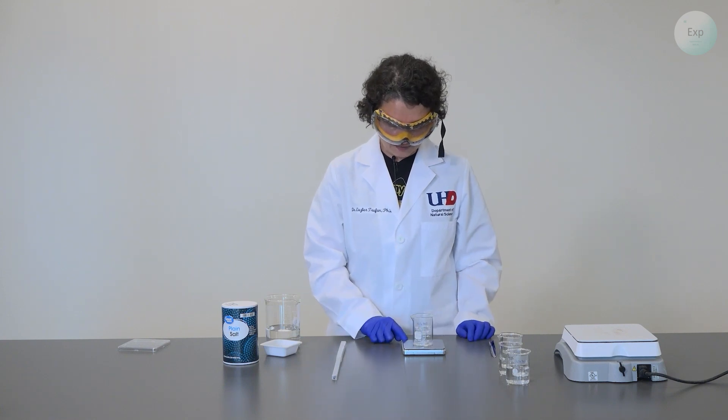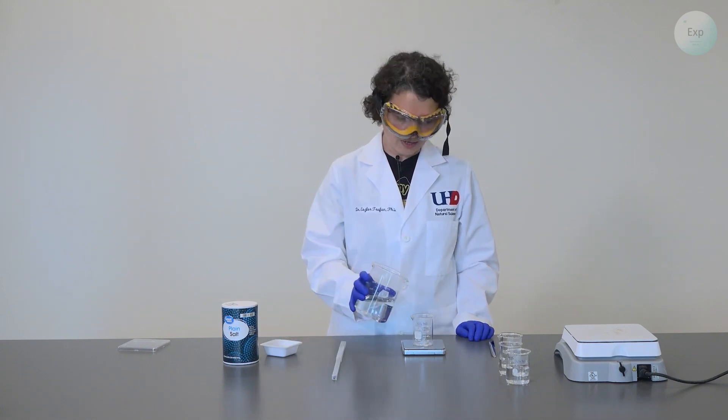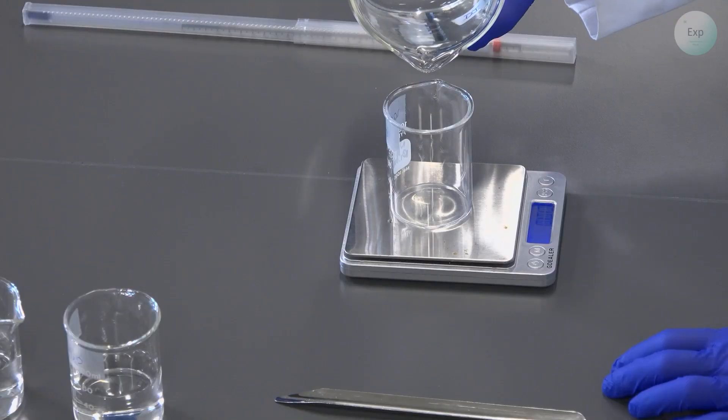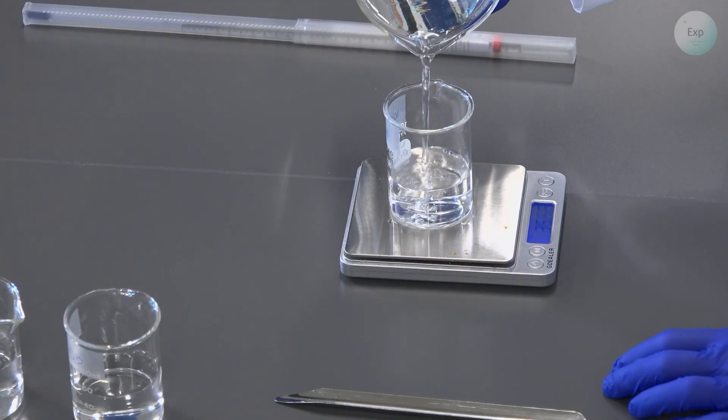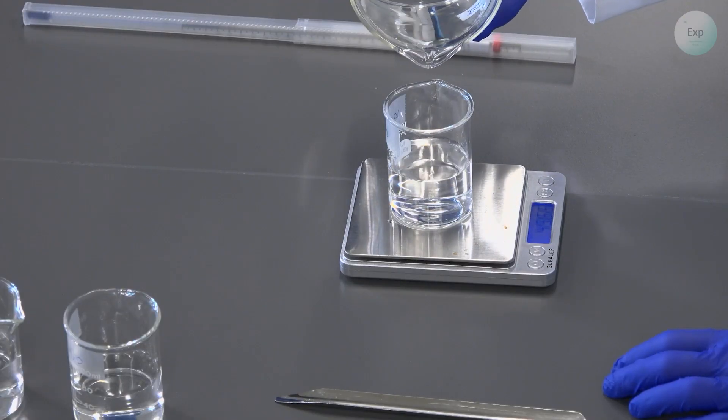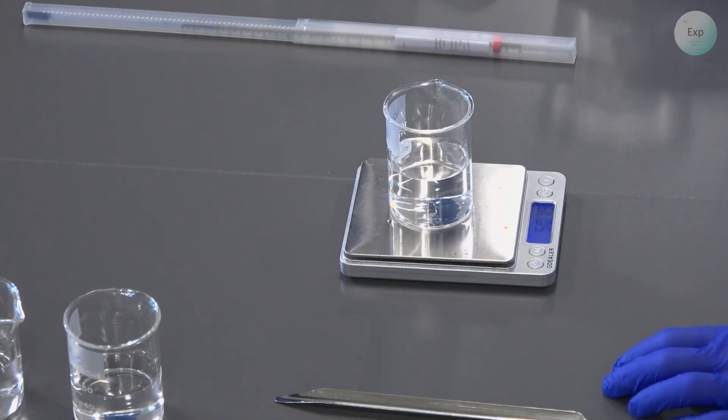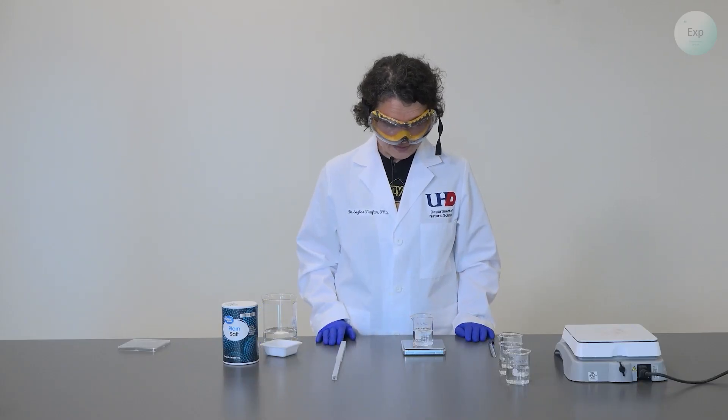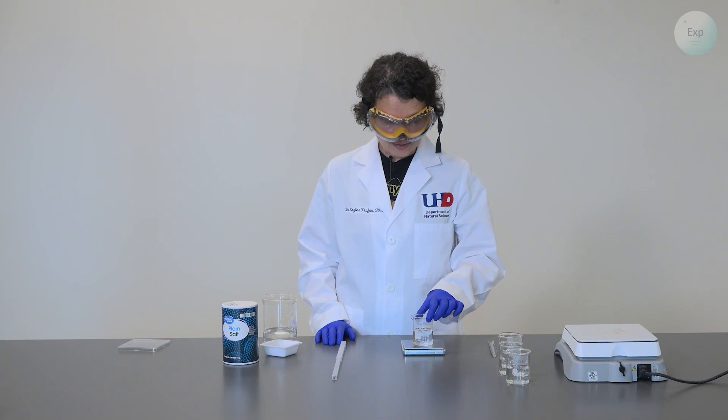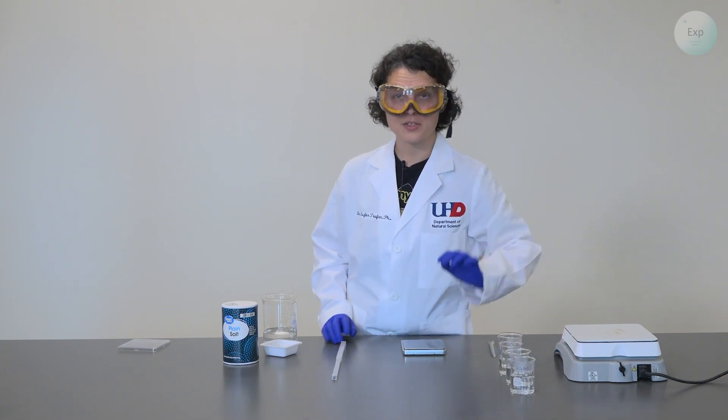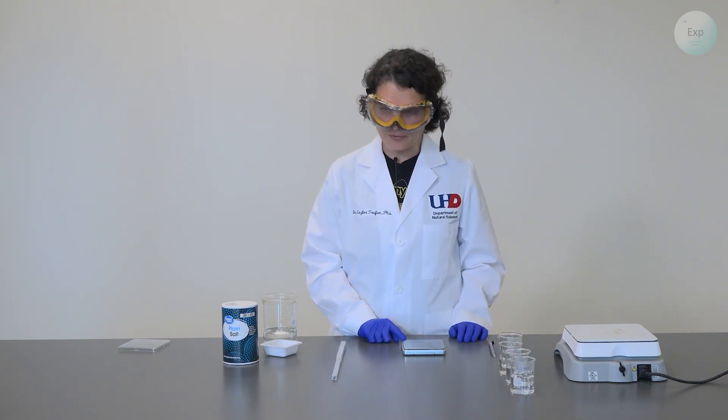I will place my final beaker on the scale, tare it, and then transfer 50 grams of water to it. This is just a little bit over at 50.79 grams. This one will eventually have 10 grams of sodium chloride added, hence the final label.